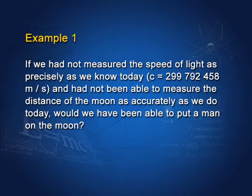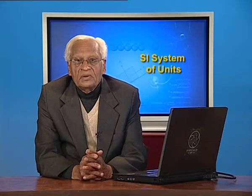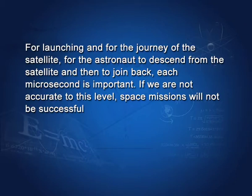Just think — if we had not measured the speed of light as precisely as we know today, 299,792,458 meters per second, and had not been able to measure the distance of the moon as accurately as we do today, would we have been able to put a man on the moon? For launching and for the journey of the satellite, for the astronaut to descend and then join back, each microsecond is important. If you are not accurate to that level, space missions will not be successful.